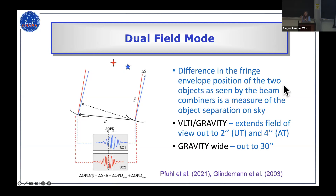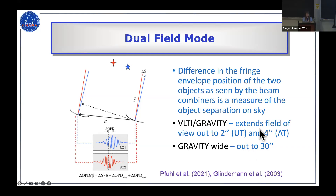You can extend interferometry beyond the narrow-angle field of view by using a dual-field mode: two stars are separated, sent to two different beam combiners, and the relative offset between the fringe patterns gives the relative position on the sky. The GRAVITY instrument at VLTI has this capability, extending the field of view out to about two arc-seconds with unit telescopes, four arc-seconds with auxiliary telescopes, and the new GRAVITY Wide mode extends it further to about 30 arc-seconds.